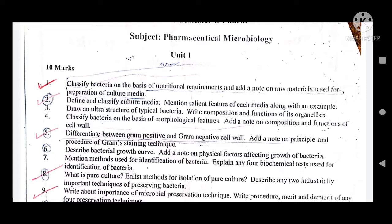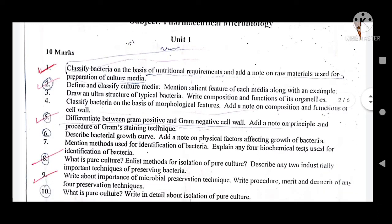In prokaryotic and eukaryotic bacteria, the organelles are not the same. For example, endoplasmic reticulum is present in eukaryotes but absent in prokaryotes. You have to mention that and write it clearly. The fourth question: classify bacteria on the basis of morphological features.